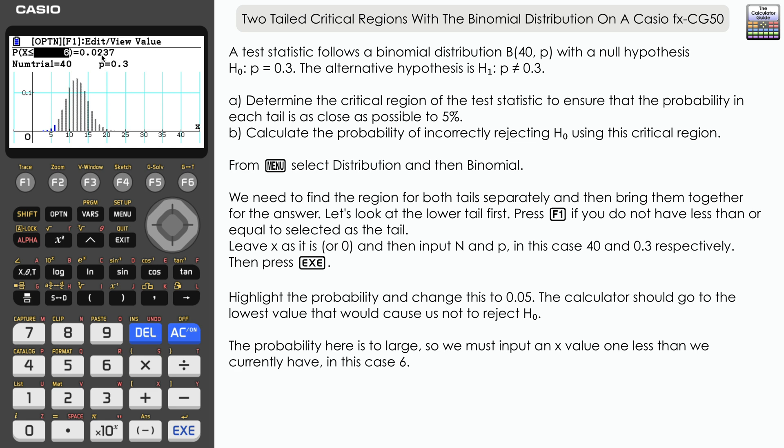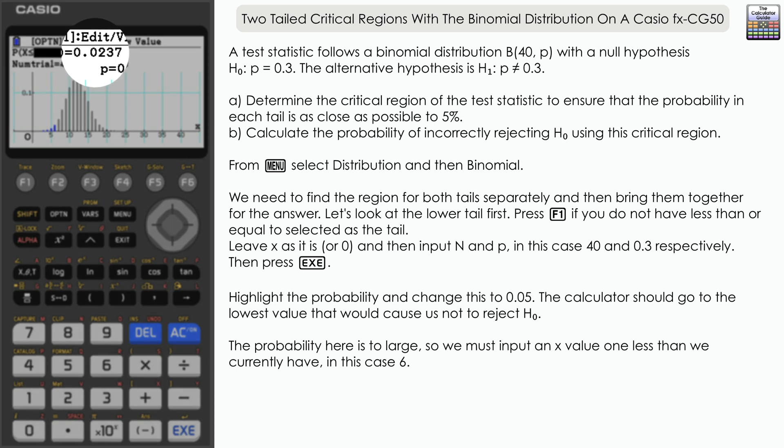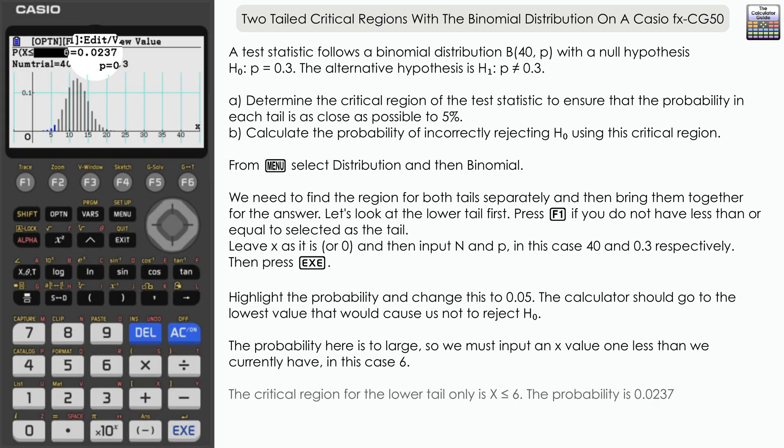That's the actual value of the critical region—we'll need that for part b. In terms of defining the critical region for the lower tail, it's values less than or equal to 6.